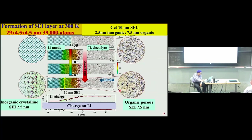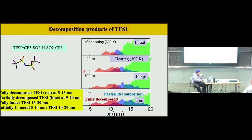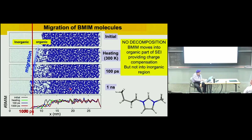What we find is that as you form this SEI, the lithium ions go from neutral in the lithium anode to about 0.8 charge in the electrolyte, and they go gradually. There's a region that's kind of crystalline near the lithium metal, and a region that's kind of porous near the electrolyte, with charges going continuously. The TFSI breaks apart — the red is fully decomposed electrolyte, and blue is partially decomposed. The interface is roughly about 10 nanometers thick. The cations of the ionic liquid basically migrate into the porous region to shield the charge.